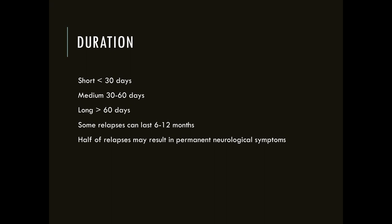Duration varies: less than 30 days is short, 30 to 60 days is intermediate, and greater than 60 days is prolonged — some relapses last six months to a year. About half of relapses can lead to permanent neurological impairment. That early slide showed relapses that didn't fully return to baseline, leading to disability accumulation. About a quarter of those lead to at least a one-point bump on the EDSS.